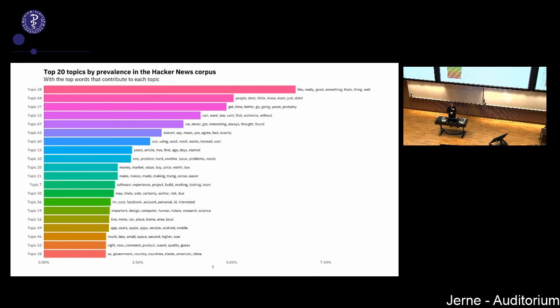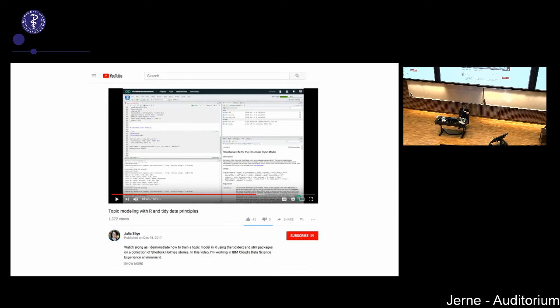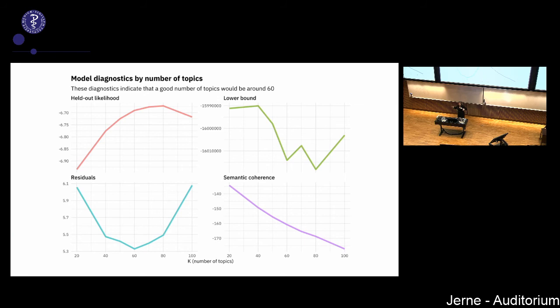If we want to use a more rigorous method to understand what goes together in unlabeled text, topic modeling does this well. We can use more rigorous methods for understanding when our model did a good job and how to choose the number of topics. These are all things this kind of approach can really help with.